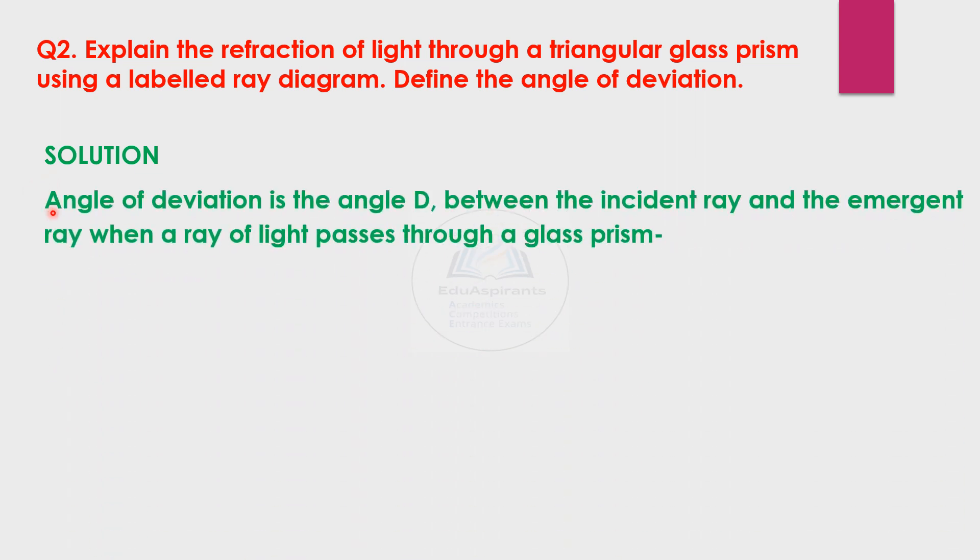Let us see the solution. Angle of deviation is the angle d between the incident ray and the emergent ray when a ray of light passes through a glass prism. So this is the ray passing, this is the deviation and angle of deviation is here. Keep revising the diagram.